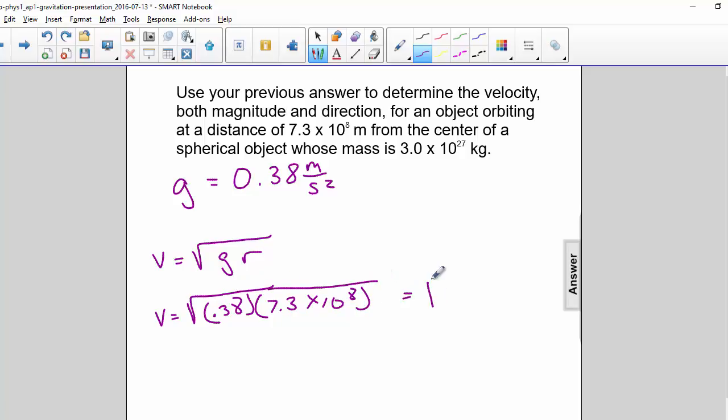So we would get the square root of 2.8 times 10 to the 8th, and so v equals 1.6 times 10 to the 4th meters per second.